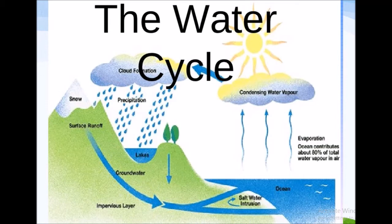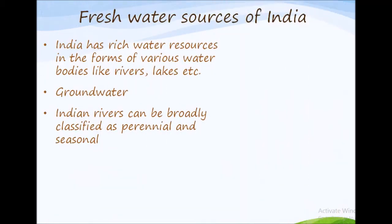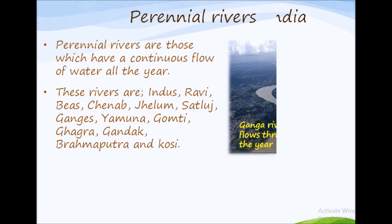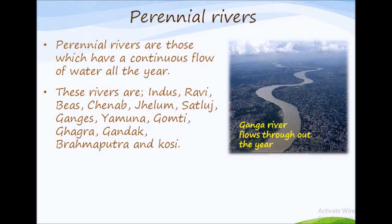Now let's discuss the freshwater sources of India. Nature has abundantly blessed India with rich water resources in the form of various water bodies like rivers, lakes, etc., and also with groundwater. Indian rivers can be broadly classified as perennial and seasonal. Perennial rivers are those rivers which have a continuous flow of water all the year.